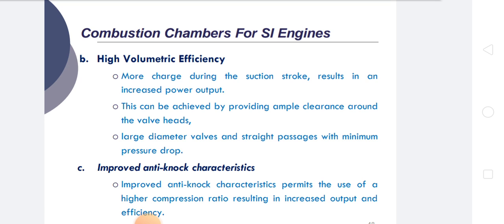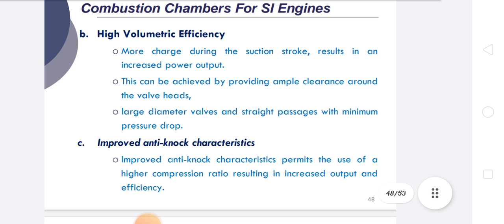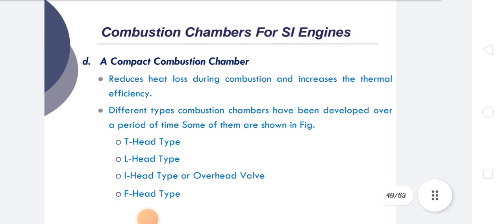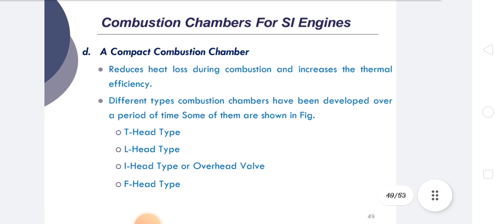We can also increase power output by amplifying clearance around valve heads or by using large diameter valves. A third factor is improved anti-knocking characteristics, achieved by use of a high compression ratio, which results in increased power output and thermal efficiency. Additionally, a compact combustion chamber reduces flame propagation distance, reduces heat loss during combustion, and increases thermal efficiency and power output.